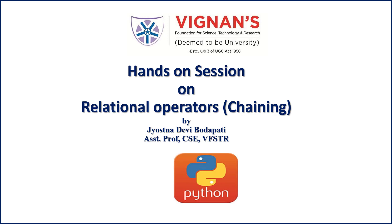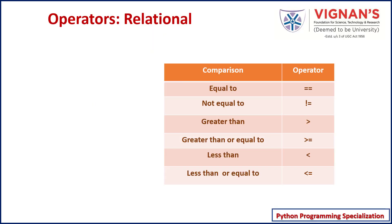In the last videos we have seen how to use various relational operators to form conditions in Python. In addition, we have also seen how to connect multiple conditions using the 'and' and 'or' operators. Python supports all these relational operators: less than, greater than, less than or equal to, greater than or equal to, and in addition, equal to and not equal to.